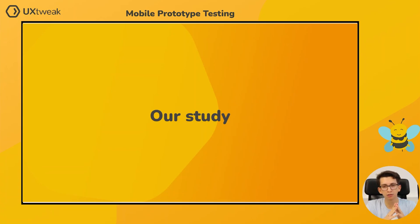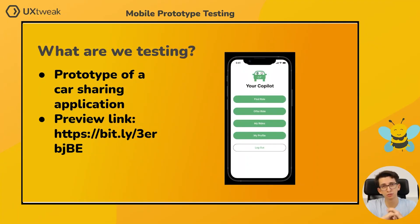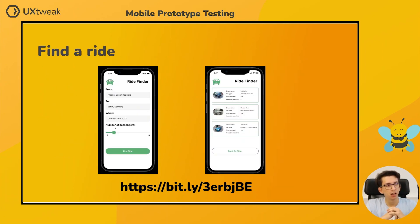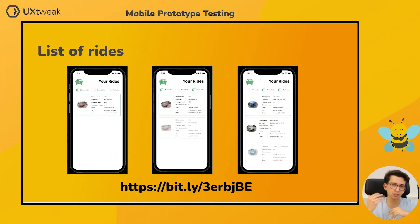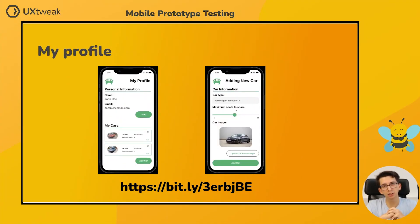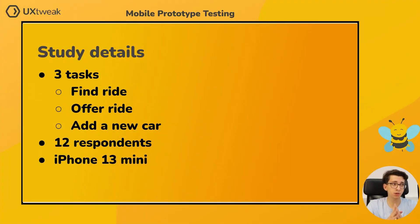Now about our study. It's a small study of a prototype of a car sharing application. It includes all the typical use cases: a ride finder, as well as offering a ride, as well as a list of rides you have already completed or that are ahead of you. Lastly, you can add a car to your profile so you don't have to always input the car information every time you want to offer a ride. The study itself has three tasks: one about finding a ride, one about offering a ride, and the final one about adding a new car to your profile.